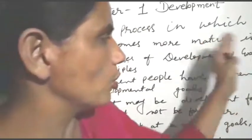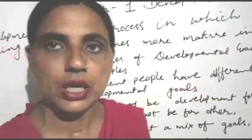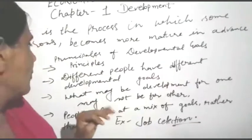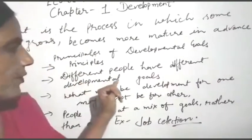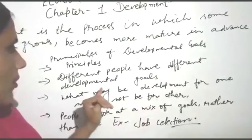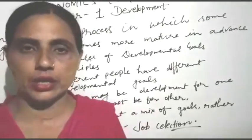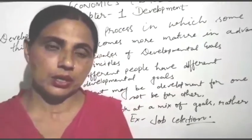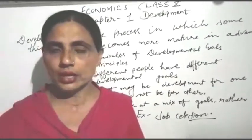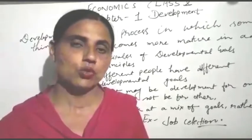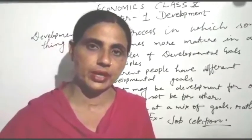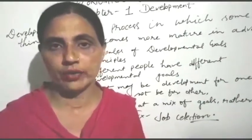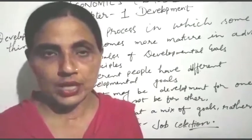When we discuss development, we will look at its principles. The first principle is: different people have different development goals. For example, a landless farmer who works in a field — his goal or dream would be to have his own land or his own field.